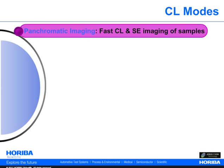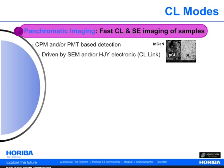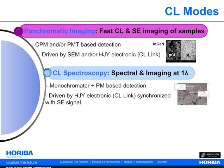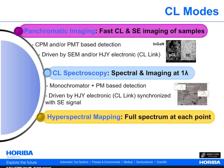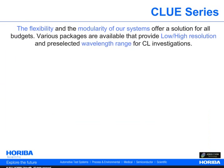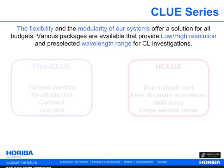The first is the panchromatic CL imaging mode, enabling fast and simple localization of the CL light emitted by the sample. This provides fast and effective visual information prior to a full investigation. The CL spectroscopy mode uses a monochromator to provide spectroscopic and imaging information of the CL light emitted by the sample. Finally, the hyperspectral CL mapping mode provides a simultaneous multi-wavelength spectrum at each point of the sample using CCD detection. The CLU series includes the Flex-CLU and the H-CLU.